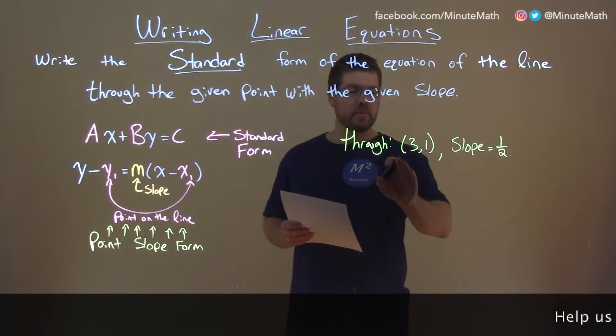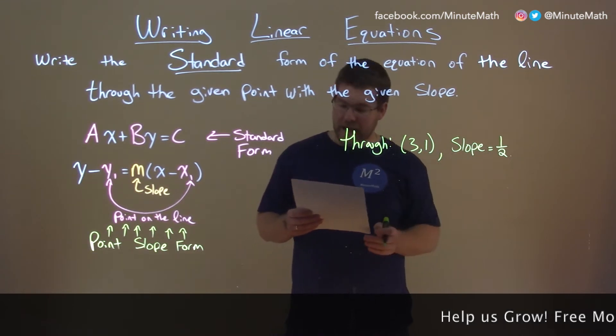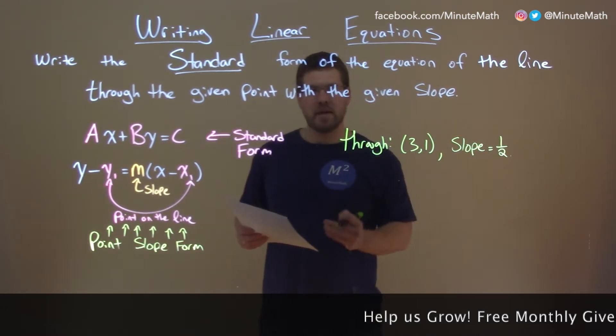If I was given this problem: through (3,1) and our slope is 1/2, and we have to write this in standard form.